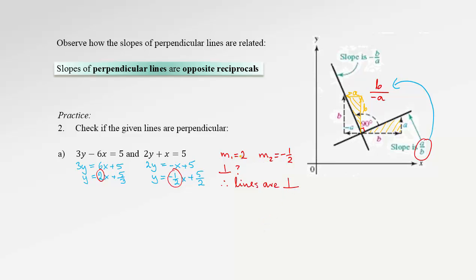There is another way of checking if two slopes are perpendicular: multiply them and the result should be negative 1. Here, 2 times negative one-half is indeed negative 1 because the twos cancel. This works because multiplying any slope a over b by its opposite reciprocal always reduces to negative 1. So that's another way of confirming the slopes are perpendicular.